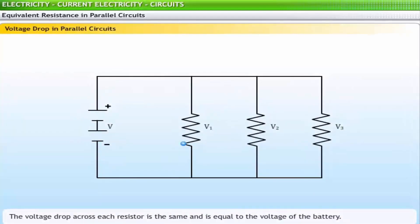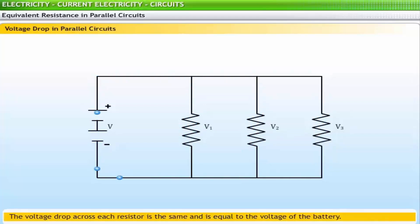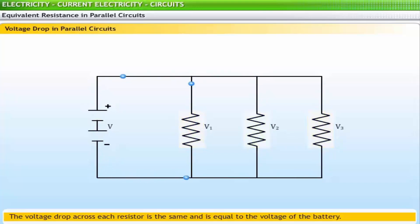In a parallel circuit, a charge does not pass through every resistor; rather, it passes through a single resistor. Thus, the entire voltage drop across that resistor must match the battery voltage. It doesn't matter whether a charge passes through resistor 1, 2, or 3 — the voltage drop across that resistor must equal the voltage of the battery: V = V1 = V2 = V3.